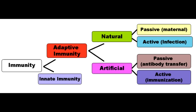The mnemonic to help remember conditions in which you would give preformed antibodies is: 'To Be Healed Rapidly.' T is for tetanus toxin, B is for botulinum toxin, Healed is for hepatitis B virus, and Rapidly is for rabies virus.